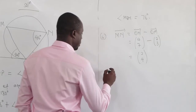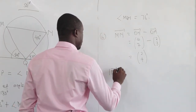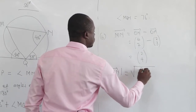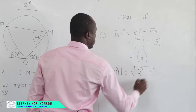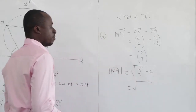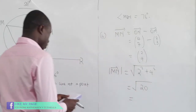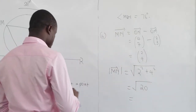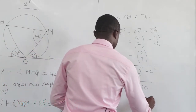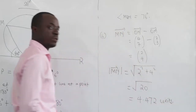We want to find the magnitude of vector MN. This equals the square root of 2 squared plus 4 squared, which is the square root of 4 plus 16, equal to the square root of 20. Putting this on the calculator gives us 4.472 units.